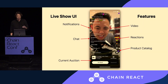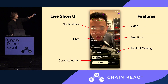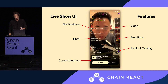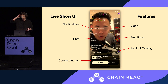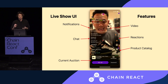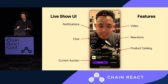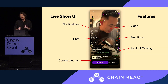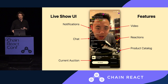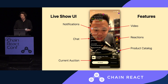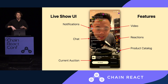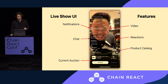Diving into live shopping in React Native — this is the main screen of the app. All these sellers have live streams where they're selling product. There are about six main features in this screen: in-app notifications of people following the seller, joining the show, and buying products; a live chat; an auction where buyers can bid on the product being streamed; the video playing in the background; emoji reactions; and a catalog where users can browse the seller's items and purchase things.